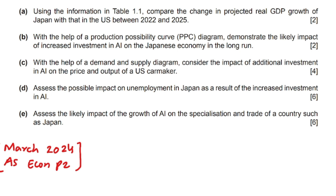The first question asks: using the information in Table 1.1, compare the change in projected real GDP growth of Japan with that of the US between 2022 and 2025. This question carries two marks, so you have to identify two things from Table 1.1.